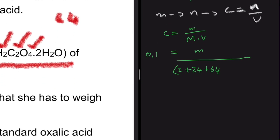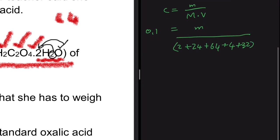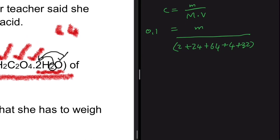The issue arises with the 2H₂O part — this is where many people go wrong. We have two hydrogen atoms multiplied by two, giving plus 4, and one oxygen atom multiplied by two, giving plus 32. So the molar mass of oxalic acid dihydrate is 2 + 24 + 64 + 4 + 32 = 126 g/mol. Multiplying by the volume of 0.25 dm³ gives a mass of 3.15 grams.